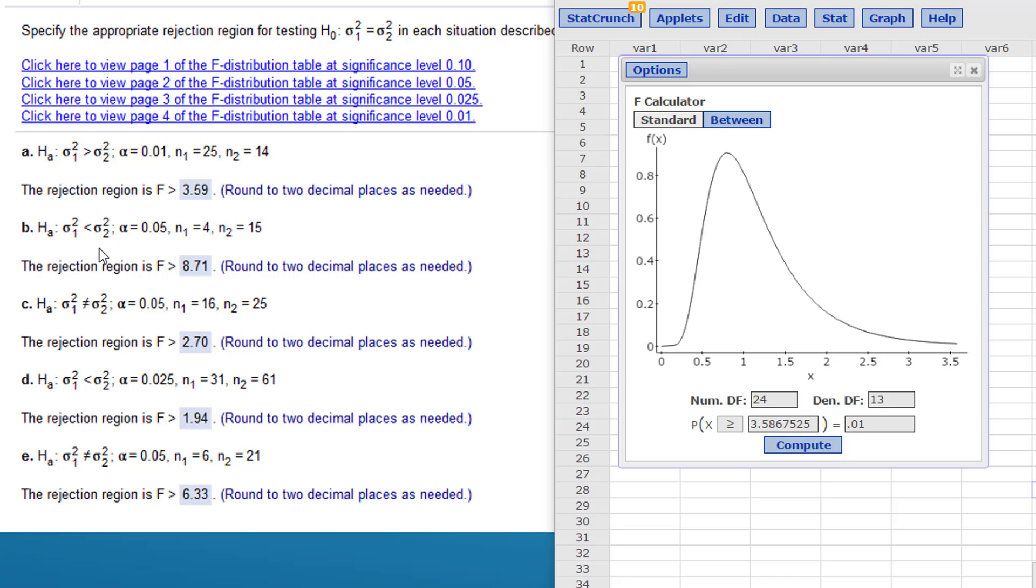For part B, we're given the alternative hypothesis of variance 1 is less than variance 2, means variance 2 is larger, which means we put the degrees of freedom of the second sample in the numerator and the degrees of freedom of the first sample in the denominator. So I go back here and 15 minus 1 is 14, 4 minus 1 is 3. My alpha this time is 0.05. I put all of that in the right tail pointing in the right direction, and we get there's our rejection area, the little red skinny area there, of 8.71, and yes that's the answer they want there.